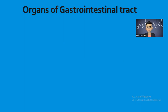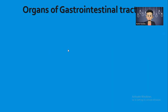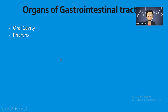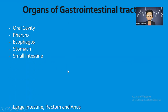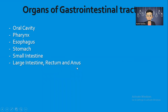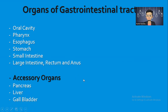Today we are learning about the digestive system. The organs of the gastrointestinal tract are: oral cavity, pharynx, esophagus, stomach, small intestine, large intestine, rectum, and anus. The accessory organs are the pancreas, liver, gallbladder, and salivary glands.